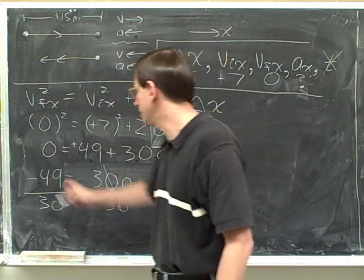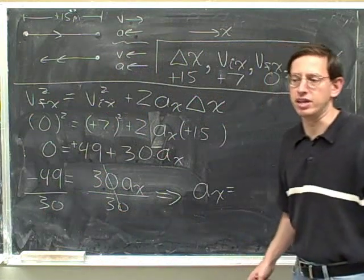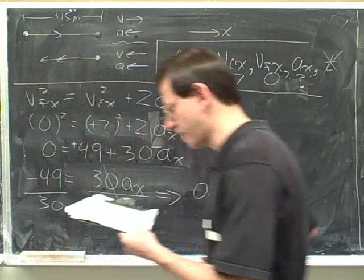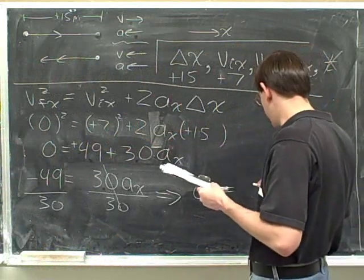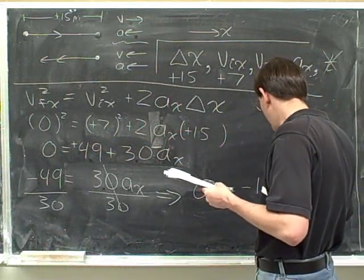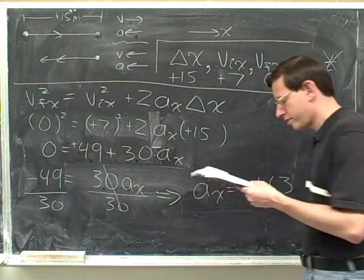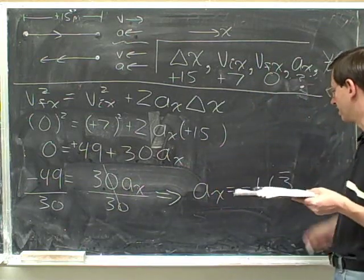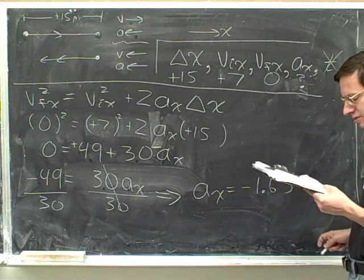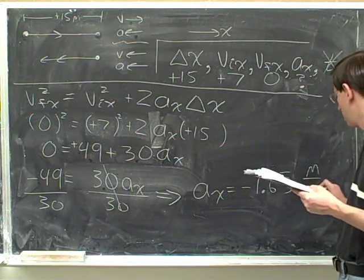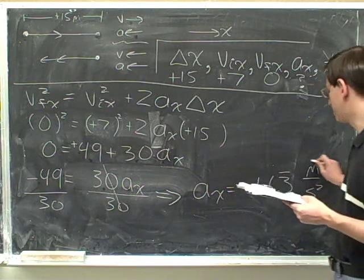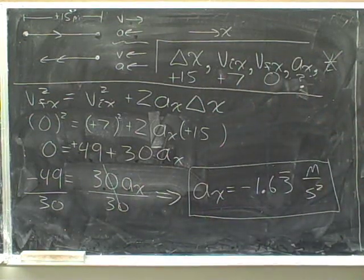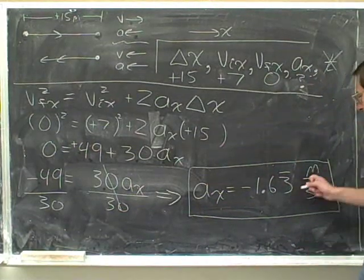And the acceleration will be negative 49 divided by 30. We can use our calculator to make that into a decimal. If you do negative 49 divided by 30 on your calculator, you'll get negative 1.633333. The 3s go on forever. We could put a bar here to show that the 3s are going on forever. And our units are meters per second squared. So please make sure that you include the units here.